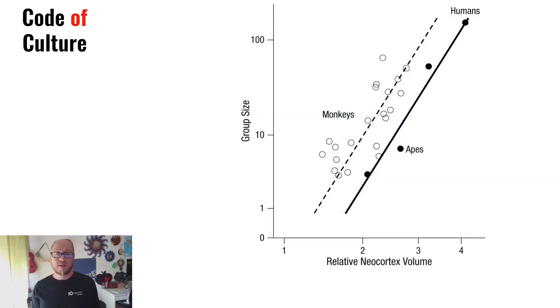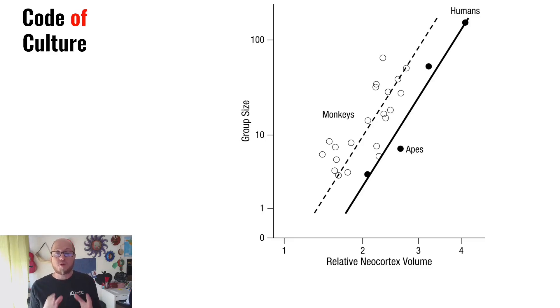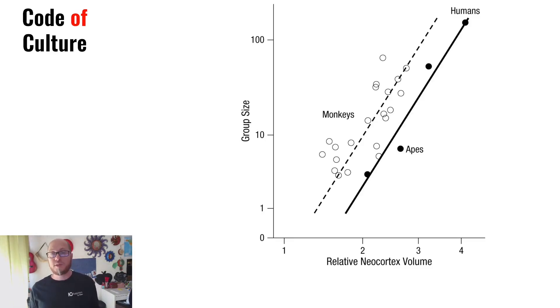The social brain hypothesis suggests that the size of our brain limits the number of stable social relationships that we can maintain. These limits, known as Dunbar's number, is approximately 150. Within the context of open source communities, understanding and working within these limits can help us create more effective cooperation and communication.